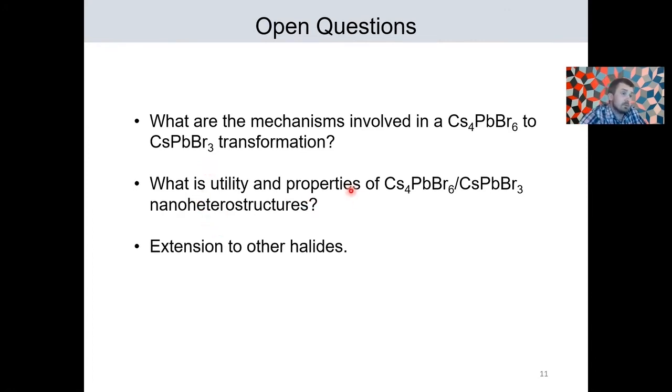Then, what is the utility and properties of perovskite and 0D nanoheterostructures? For example, the fact that there might be some lattice strain next to the quantum confined domain of perovskite. Does it have an effect on radiative lifetime, on the exciton coherence lifetime? These are interesting questions to tackle experimentally. And then, towards the direction of material discovery, whether anhydride amine chemistry is extendable to other halides.